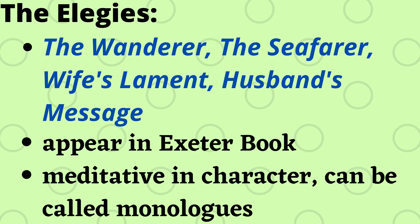Let us have a look at some of the elegies written during the Old English period. They are The Wanderer, The Seafarer, Wife's Lament, and Husband's Message. These elegies appear in the Exeter Book and they are meditative in character, and hence they can also be called monologues.